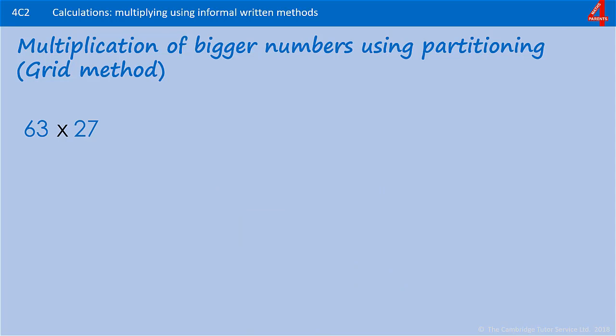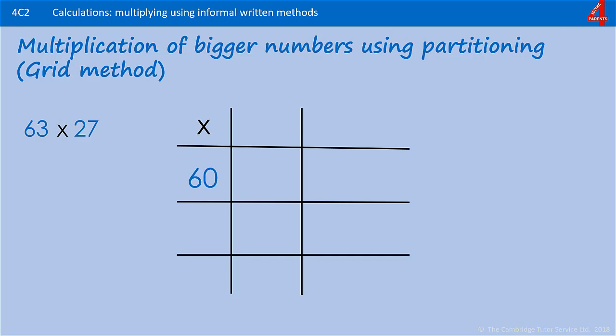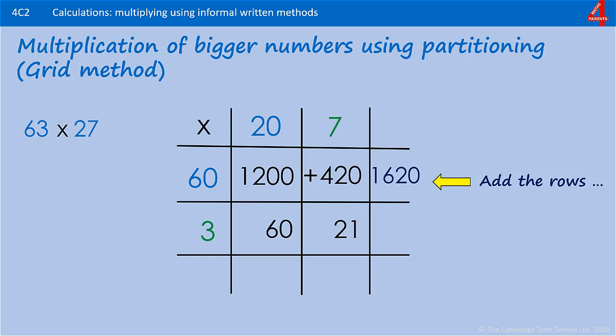Here's one for you to try. 63 multiplied by 27. Pause the video, have a go. We have 60 and 3 multiplied by 20 and 7. Starting with 60 times 20 is 1200. 60 times 7, 420. 3 times 20, that will be 60. And 3 times 7 is 21. It's up to you whether you add the rows, so that you end up with 1620 add 81, or you add the columns, so that you end up with 1260 add 441. Whichever one you choose, your total should be 1701.